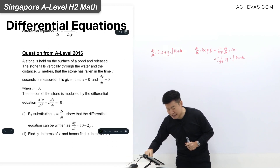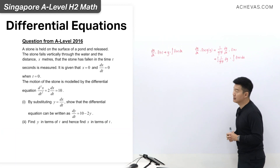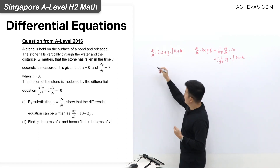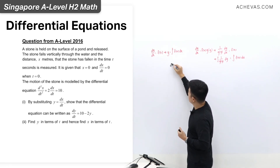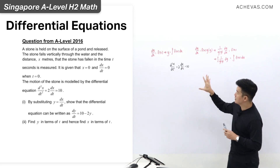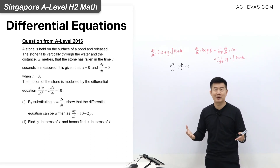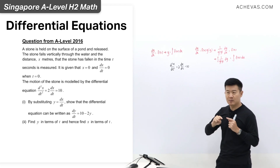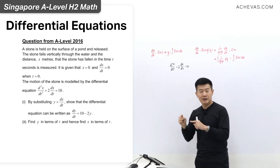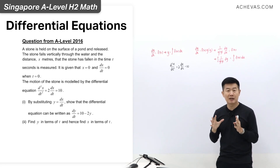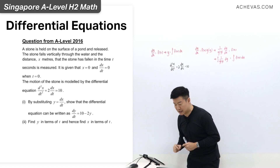Let us take a look at one where there is a little bit of a twist to the question. It came out in the year 2016 in A-level, where we are supposed to solve a second-order differential equation. Let me write it down first. The second-order differential equation is: d²x/dt² + 2(dx/dt) = 10. This is a second-order differential equation that we actually cannot solve independently. But if you look at the question, it gives you a help — a set of instructions we are simply supposed to follow, believing that the instruction will change this into a format we can solve independently according to our syllabus.